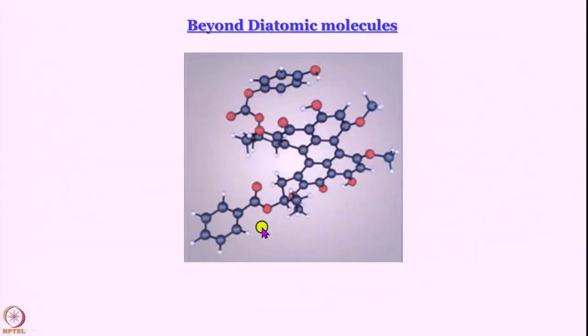In this course we will not reach this molecule — it is called calphostin C. I had worked on it; we did some experiments and then our collaborators did a quantum chemical calculation. In those days, more than 20 years ago, on the best supercomputer available at that university it took one year to get the optimized structure of calphostin C — definitely way beyond a diatomic molecule. We will not go this far, but we will try to talk about molecules with at least a few atoms and give you an idea of how to develop a molecular orbital theoretical treatment of such molecules.